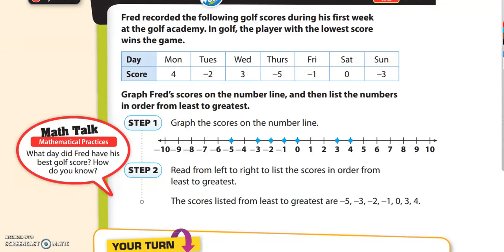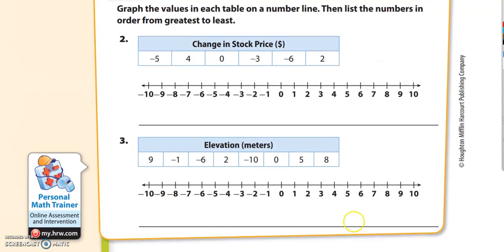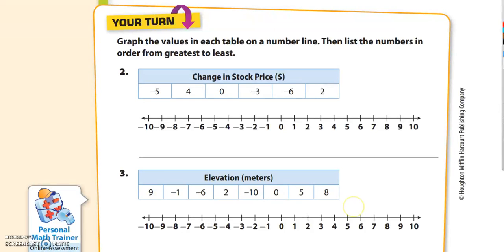So let's go ahead and go to the bottom of the page. And now you get to try this. Now the only thing you have to pay attention to is that what we just talked about was least to greatest, and then check out these directions on your turn. It says, graph the values in each table on a number line, then list the numbers in order from greatest to least. So we just showed you this great strategy, how if you read the numbers from left to right, that'd be least to greatest. So we just got to pay attention that this direction actually asks you to do it from greatest to least.